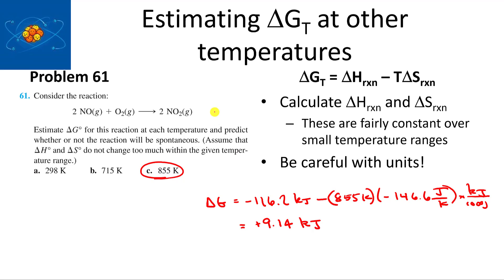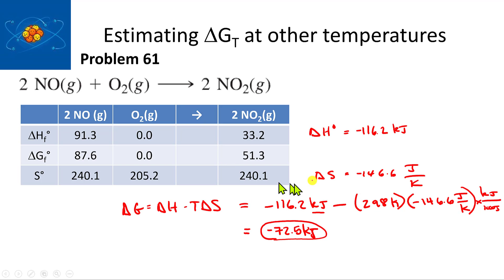If you double-check, that value makes sense compared to what we calculated before. This says it's spontaneous at low temperatures because delta H is negative and becomes non-spontaneous at higher temperatures. So all these calculations make sense with respect to each other.